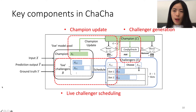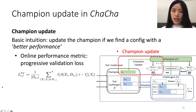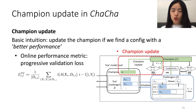Now let's look at how we update a Champion. One basic intuition is to update it once we find a configuration with better performance. For example, we can calculate the progressive validation loss, which is a commonly used empirical performance metric in online learning. But the tricky part is that in the online learning setting, we need to be careful about the potential gap between the empirical performance and the true performance, which is essentially affected by how many observations the model has accumulated and the function class of the model.